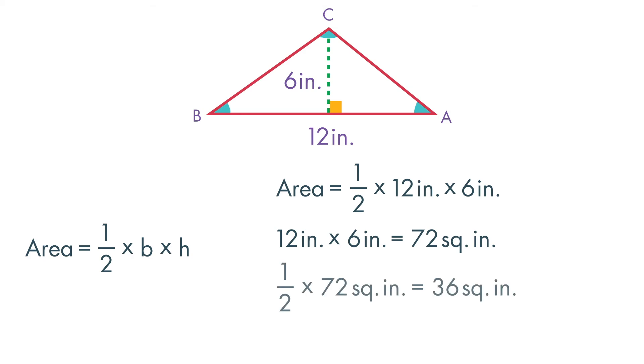One-half times 72 is equal to 36. So, the area of this triangle is 36 square inches.